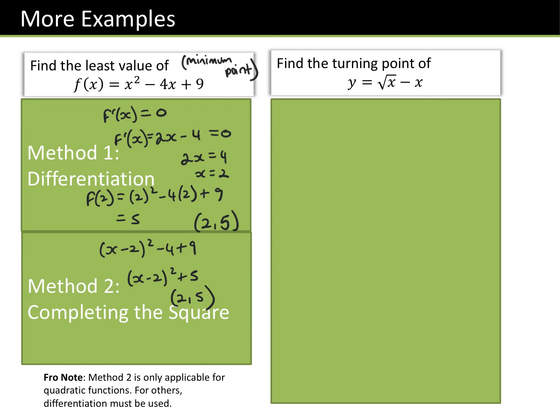When we look at y = √x − x, there are no quadratics here, so we must use differentiation. If we're looking for a turning point, a turning point is where our gradient is zero. Always remember that. Write it down: turning point, gradient = 0.